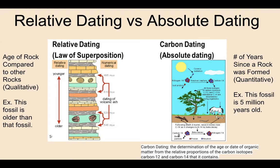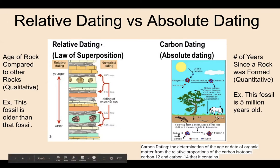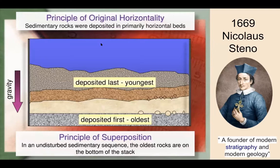You're probably familiar with carbon dating as a form of absolute dating, but today we're focusing on relative dating. The first two methods are the principle of original horizontality, which came about in 1669 by a scientist named Nicolaus Steno. He stated that sedimentary rocks are deposited in primarily horizontal beds. If a rock layer is folded or inclined, it must have been moved by crustal disturbances such as mountain building, faults, or plate movement.